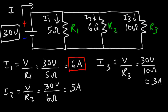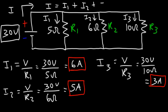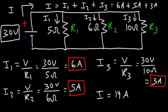Now that we have the current flowing through each resistor, we can calculate the current leaving the battery. That current is the sum of i1, i2, and i3: 6 + 5 + 3 = 14 amps. That's a quick and simple way to calculate the current flowing in a parallel circuit.